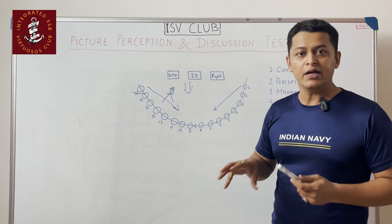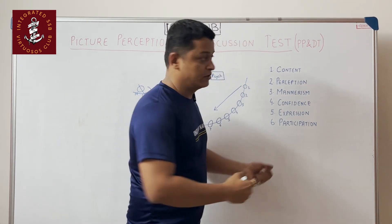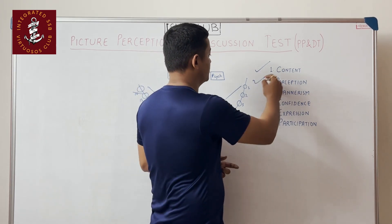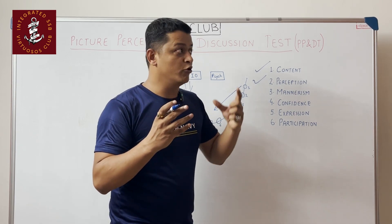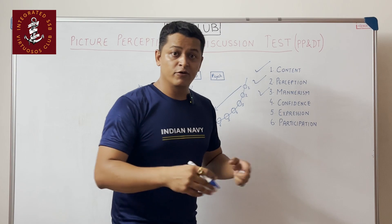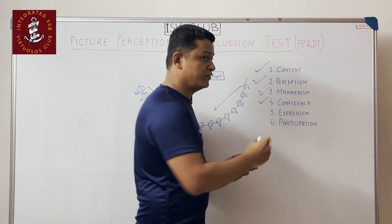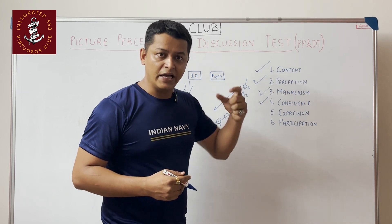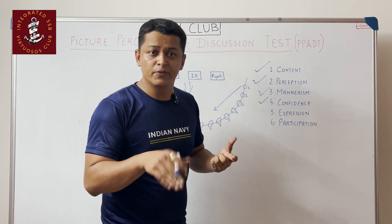The assessment in PPDT is based on several pointers. First, the content of your story — what you have perceived and how you relate it to your story, giving life to what you saw in the picture. Second, the manner in which you give your individual narration and how you behave during the group discussion. Third, your confidence levels when talking — if your story has depth and knowledge, you will naturally speak confidently without beating around the bush.